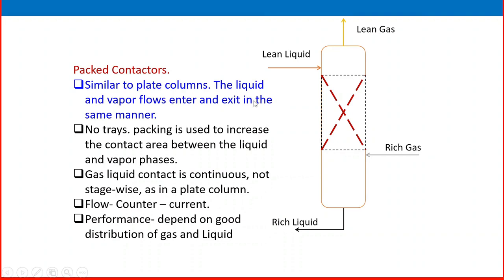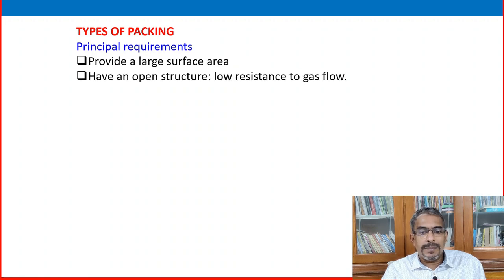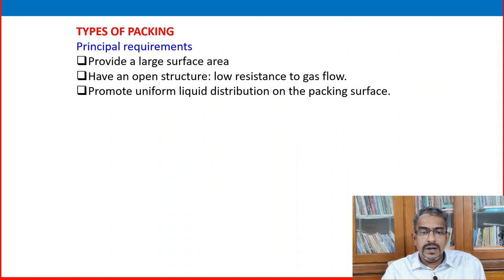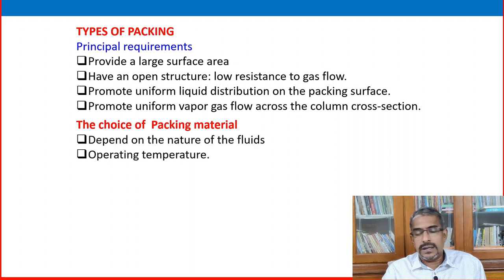Packed towers or packed contactors are similar to plate columns — liquid and vapor enter and exit in the same manner, but no trays are used. Packing increases contact area between liquid and vapor phases; gas-liquid contact is continuous, not stage-wise. Counter-current flow is the norm; performance depends on good distribution of gas and liquid. Packing provides large surface area, open structure, lower resistance to gas flow, and promotes uniform liquid and gas distribution. The choice of packing material depends on the nature of the fluid — corrosive, foaming, temperature, and chemical composition.